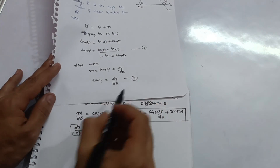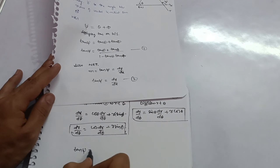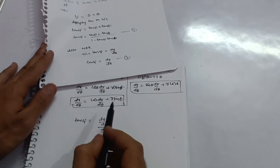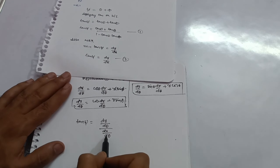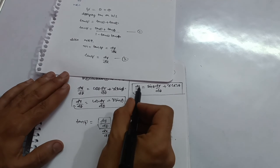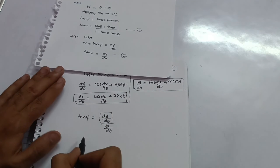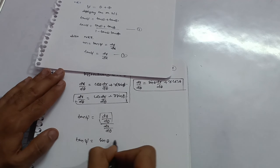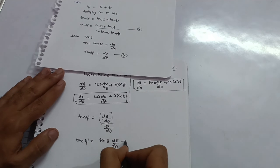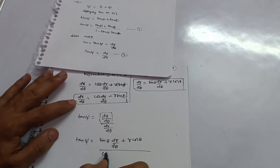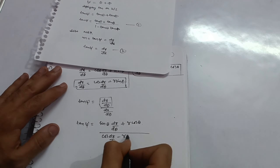We rewrite the second equation: tan ψ = dy/dx = (dy/dθ) / (dx/dθ), since the dθ terms cancel. Substituting our calculated derivatives: tan ψ = (sin θ · dr/dθ + r cos θ) / (cos θ · dr/dθ − r sin θ).